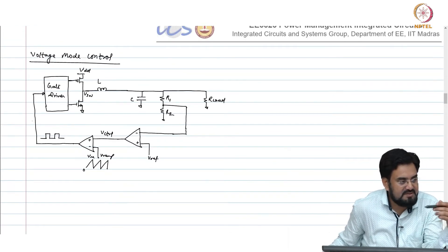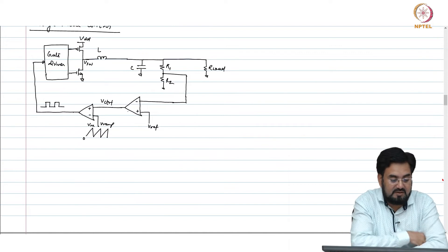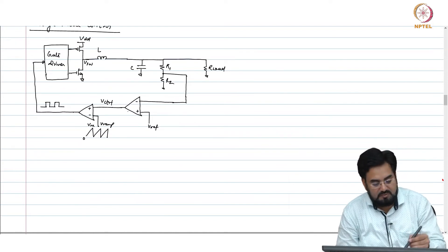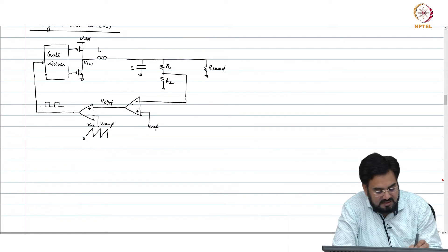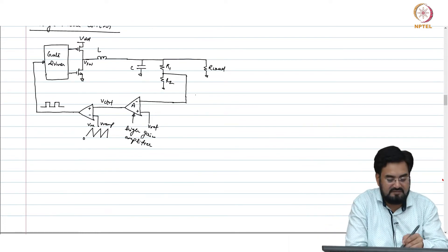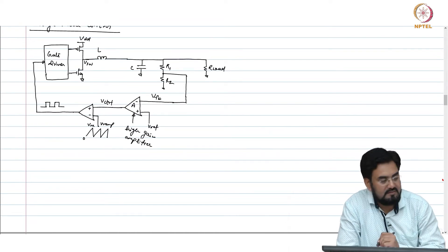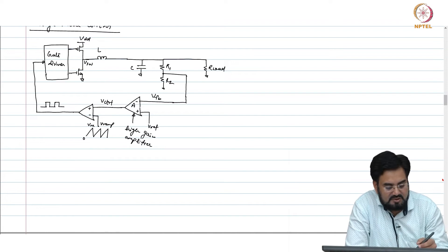The reason we call it voltage mode control is that your duty cycle is only controlled by the voltage — there is no current component here. We need an amplifier because we have to regulate the feedback voltage to Vref, so we need a very high DC gain. This amplifier has to have a very high gain — around 1000 or so.